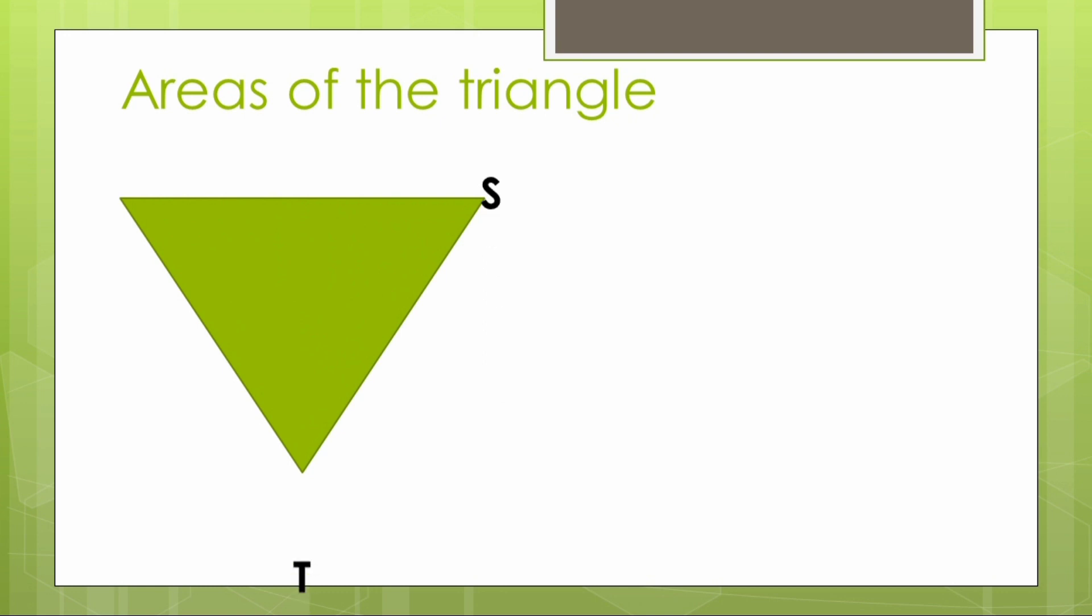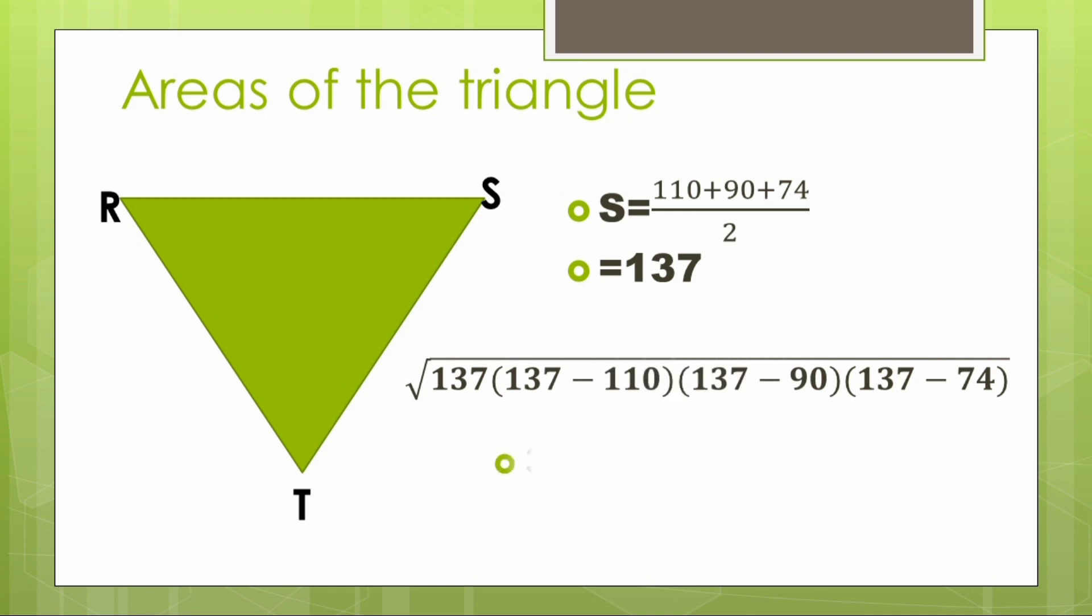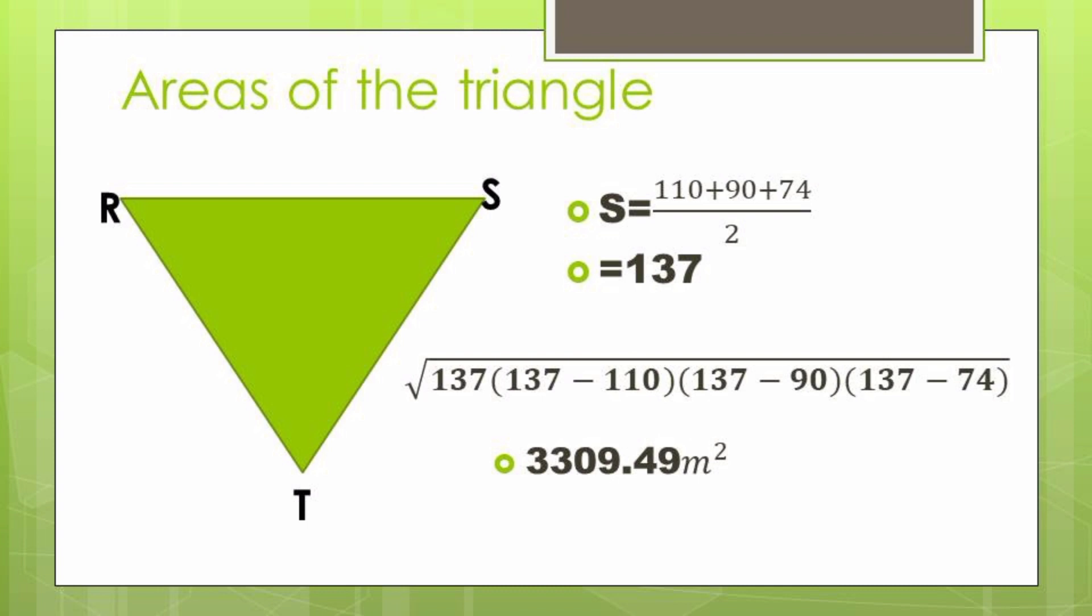So triangle TRS, having done that, s will be half the perimeter. So perimeter, you add all the lines divided by two, giving us 137 meters. So 137 that will be our s. Again we come and we input that in our formula. After having done that we get our area as 3309.49 meters squared.